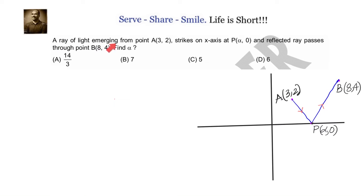A ray of light emerging from point A(3, 2) strikes the x-axis at point B(α, 0) and the reflected ray passes through the point (8, 4). Find the value of α. We can solve this problem in more than one method, and we will try to solve it in a simpler way.